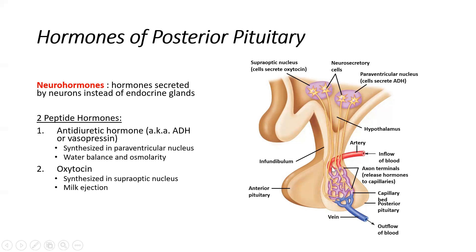Starting with the posterior pituitary: the somas of these neurons are up in the hypothalamus, and the axons project through the infundibulum all the way down to the posterior pituitary. Two peptide hormones are secreted here — they are made in the hypothalamus but released from the posterior pituitary. The first is antidiuretic hormone, or ADH, also called vasopressin, synthesized in the paraventricular nucleus of the hypothalamus. Oxytocin is secreted from the supraoptic nucleus — a different cluster of cells.